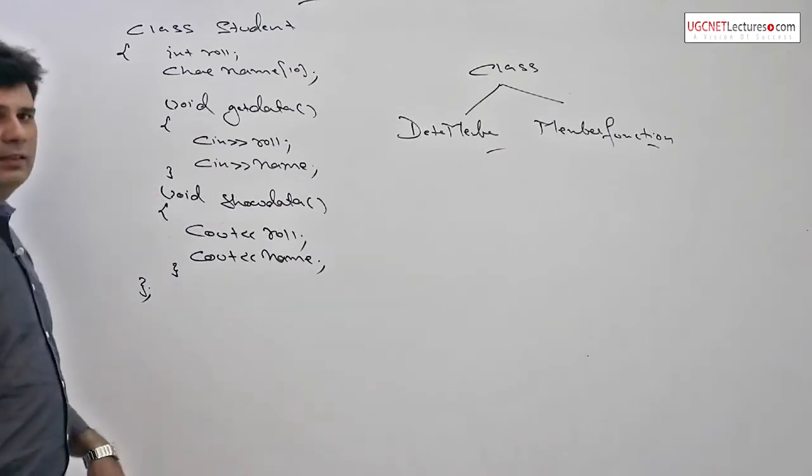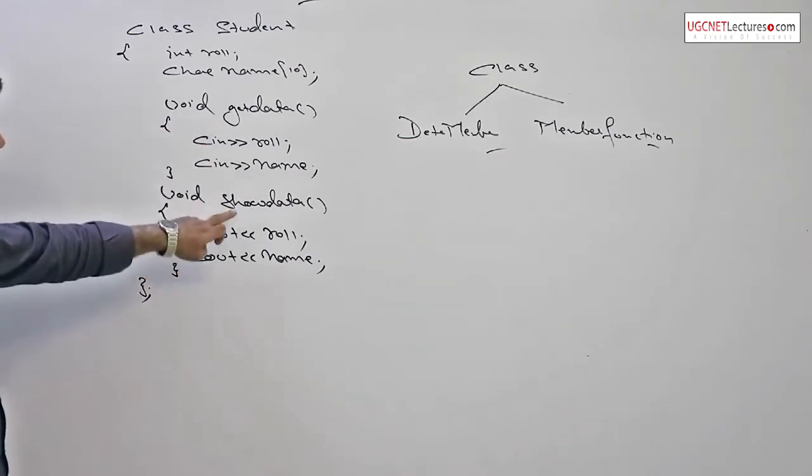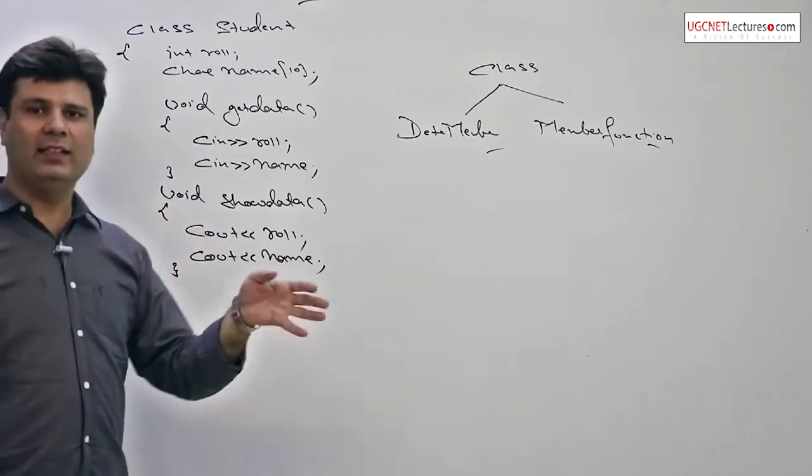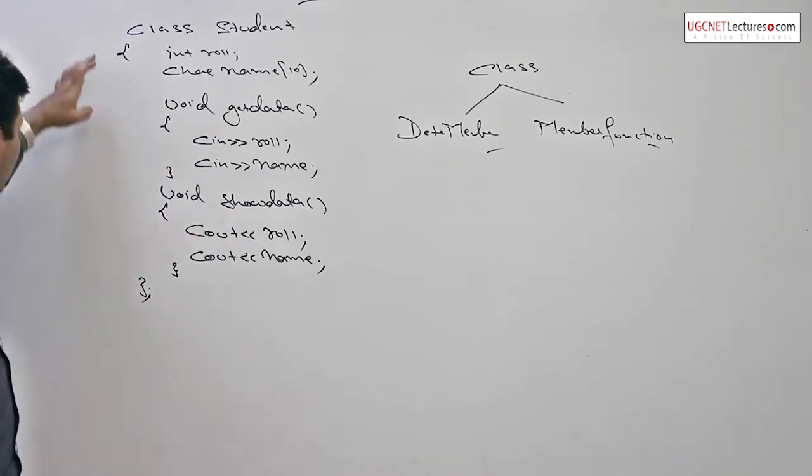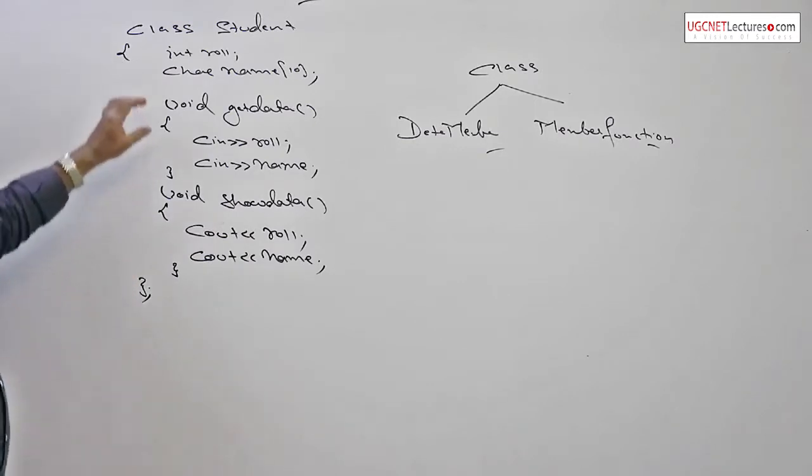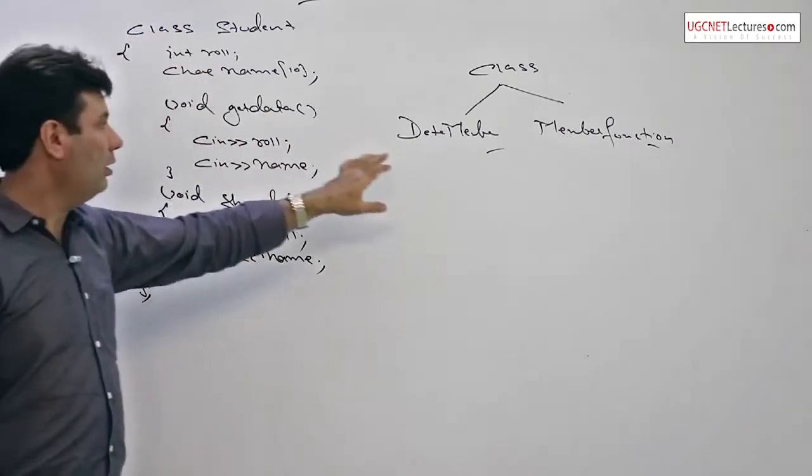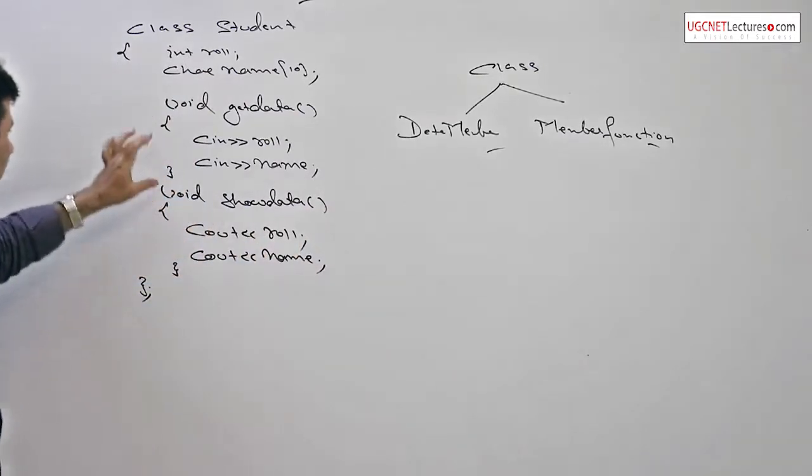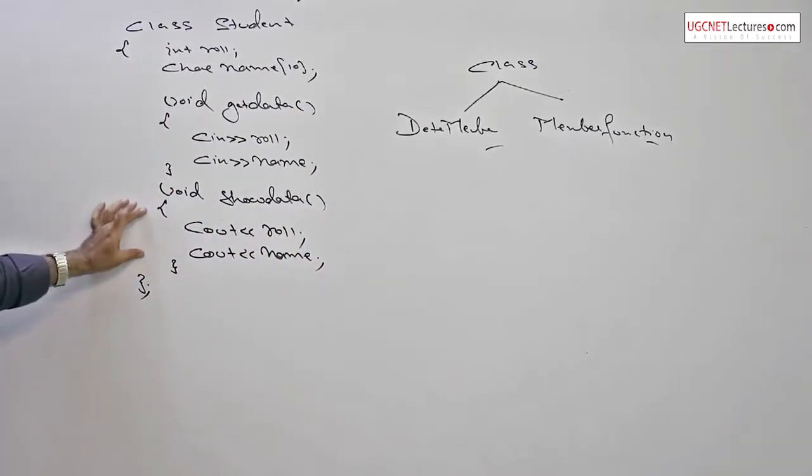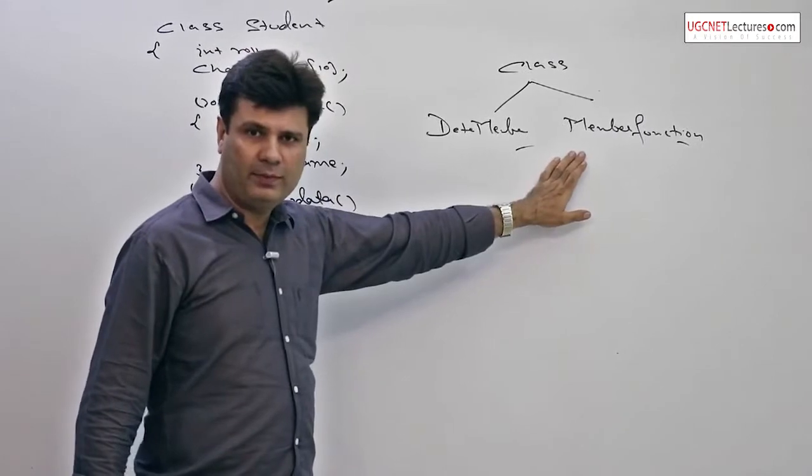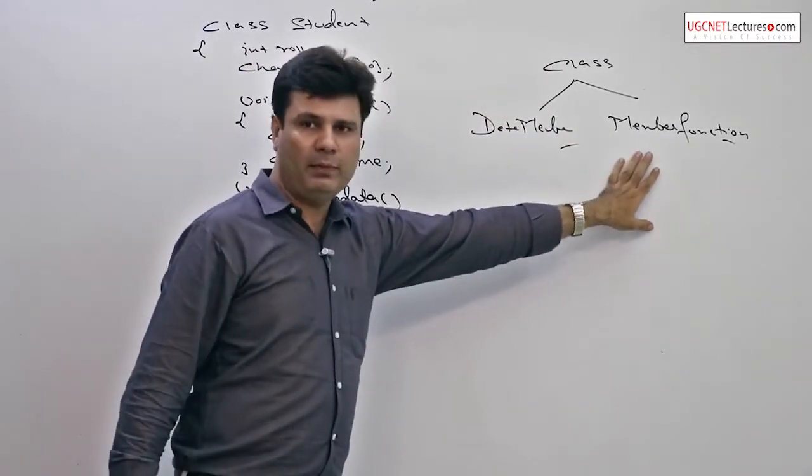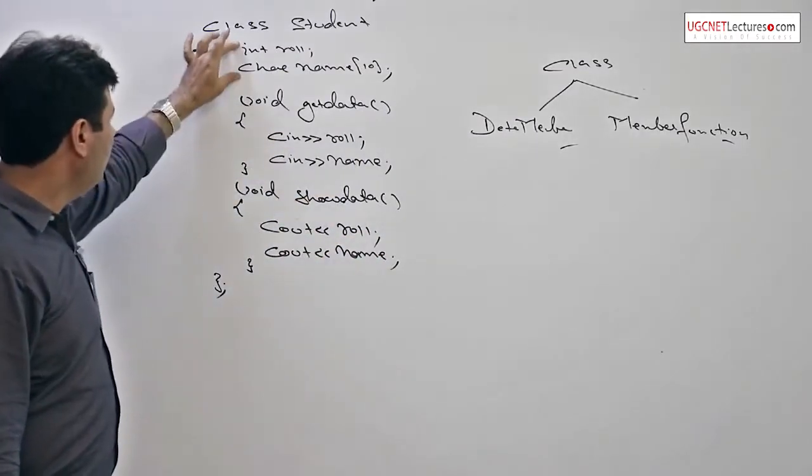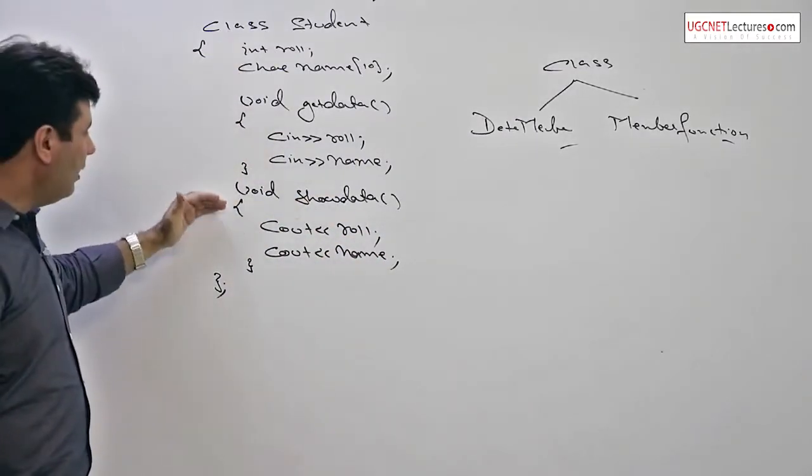So this is a class. The get data and show data, which were external entities in case of structure, are now encapsulated within a class. We have two variables which are called data members, and two functions get data and show data which are the member functions. So now you can say a class is a group of two things: data members and member functions.